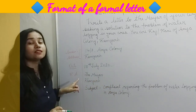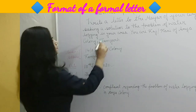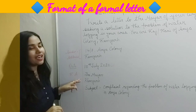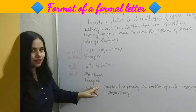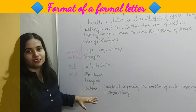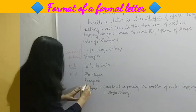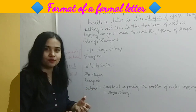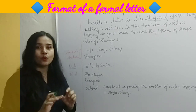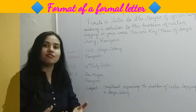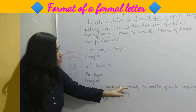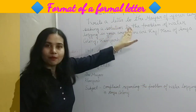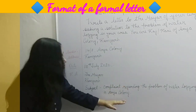Next is the receiver's address. To whom you are writing the letter? The Mayor, Ramghar. After this, leave one line and write the subject — the main point you want to discuss with the recipient. For example: 'Complaint regarding the problem of water lodging in R.A. Colony.' The problem given in the question becomes the subject of the letter.